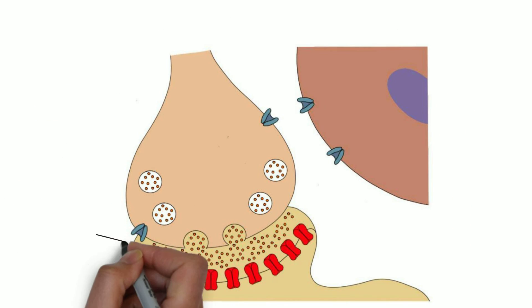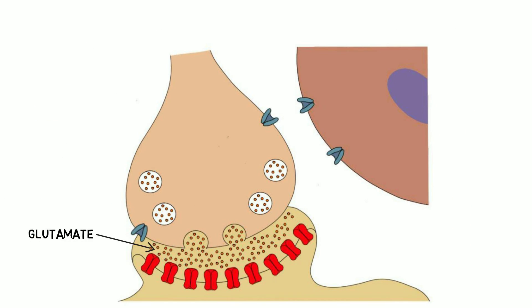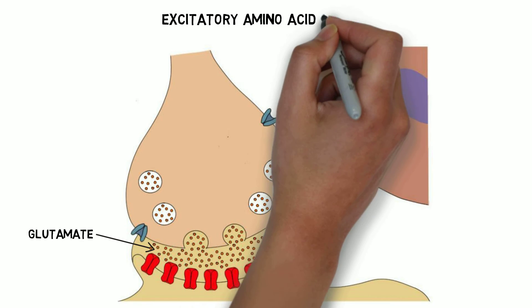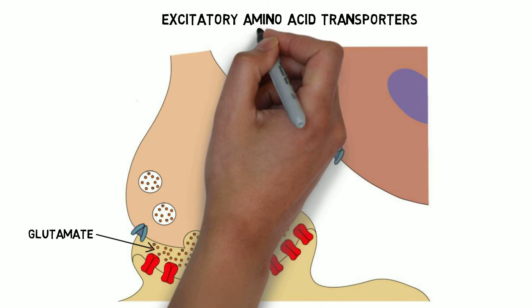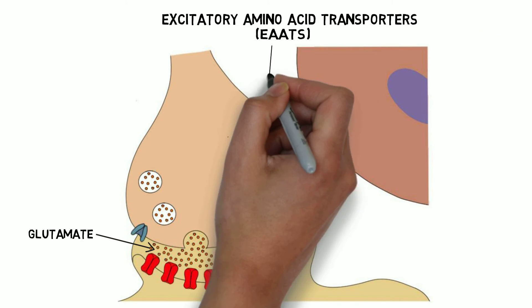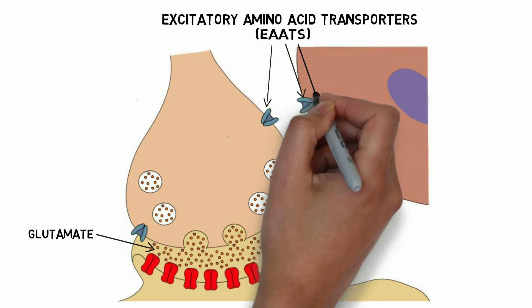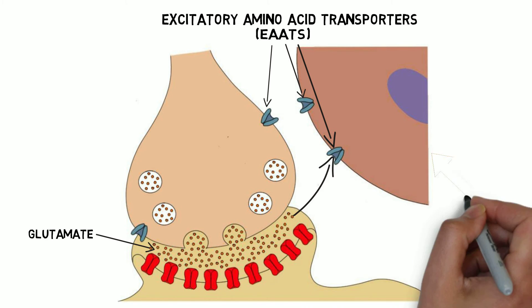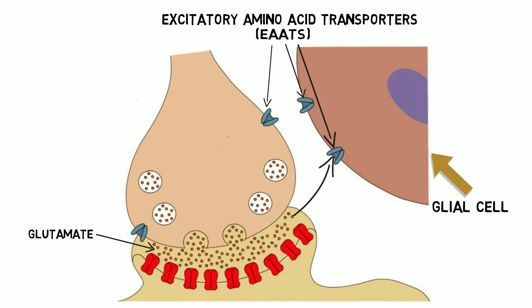Glutamate is removed from the synaptic cleft by a class of transporter proteins called the excitatory amino acid transporters, or EAATs. EAATs carry glutamate into neurons and glial cells.